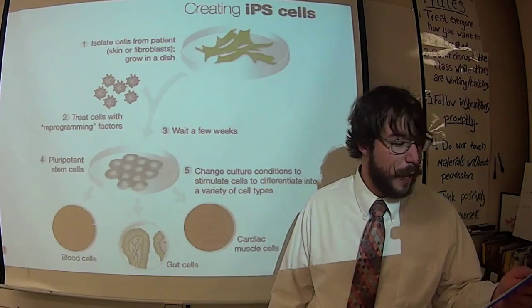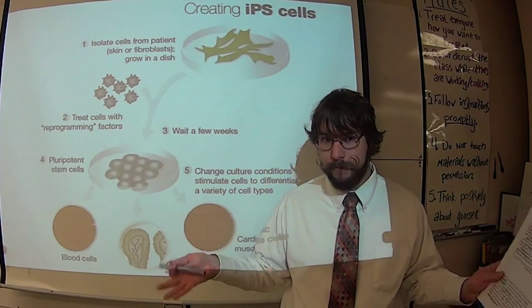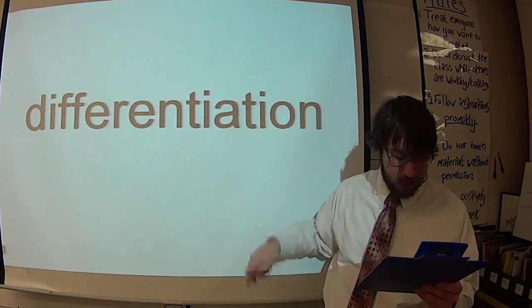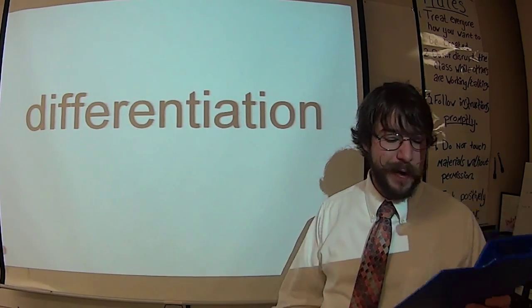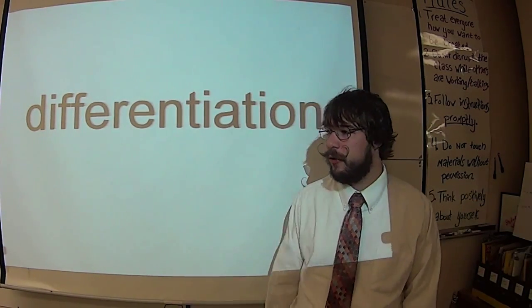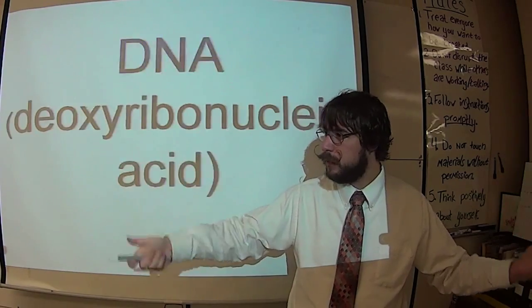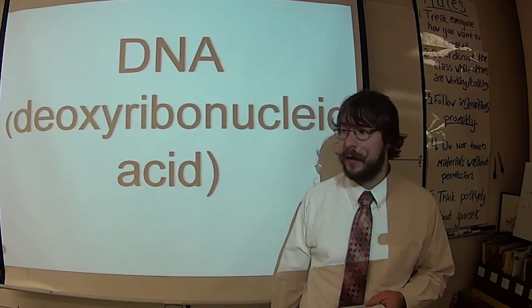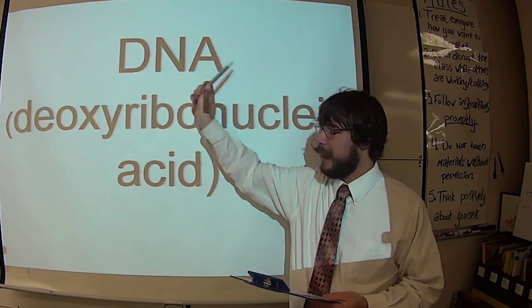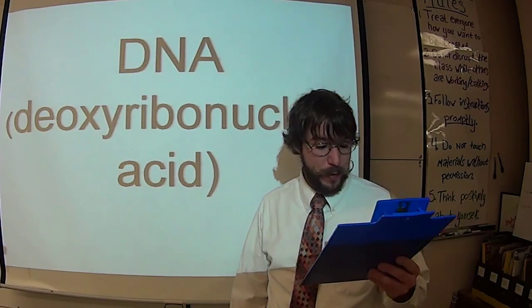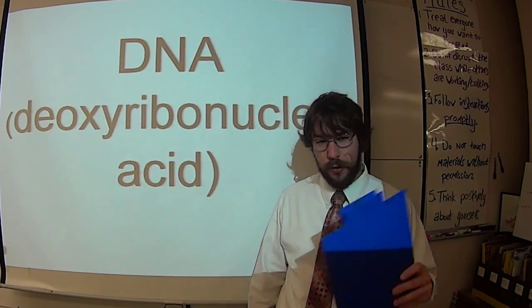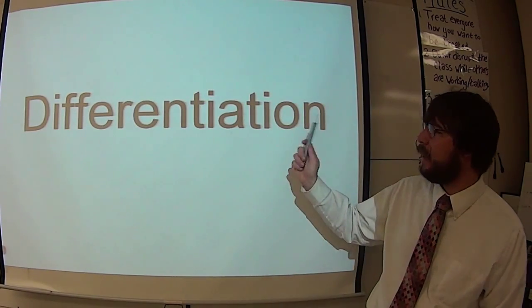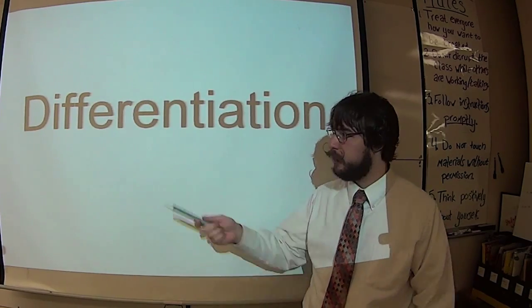So, when cells become a new type of cell, this process is called differentiation. Again, the cells becoming different from each other. It's controlled by the genes in our blank. Which is what makes our cells different from each other. Differentiation is what makes our cells different from each other. Very imaginative name. Good work, scientists.